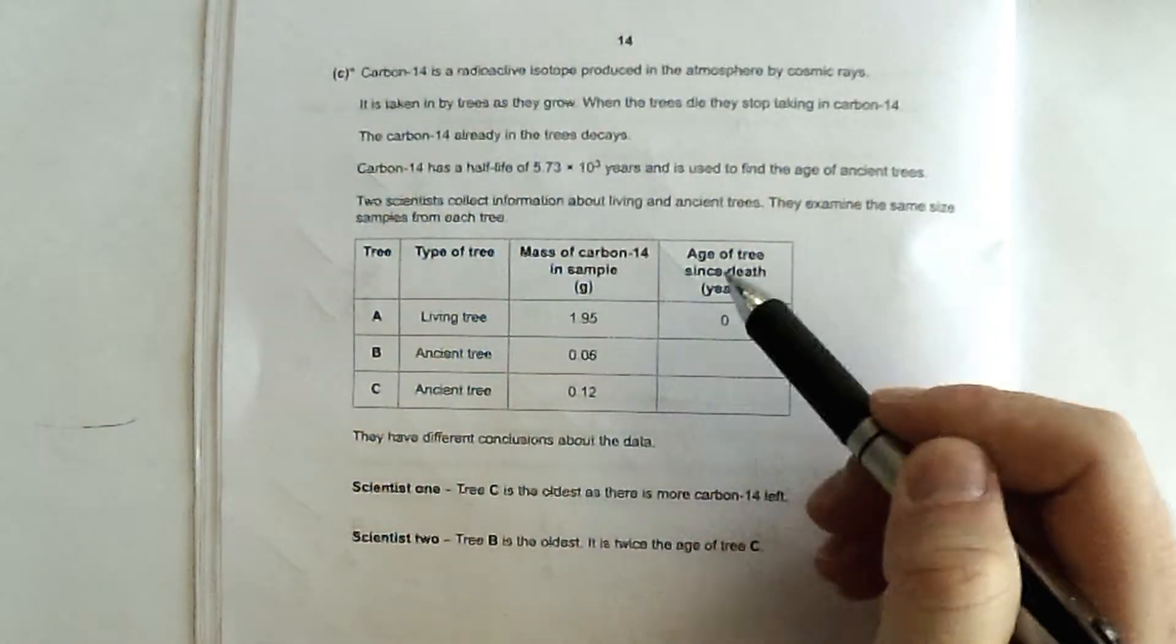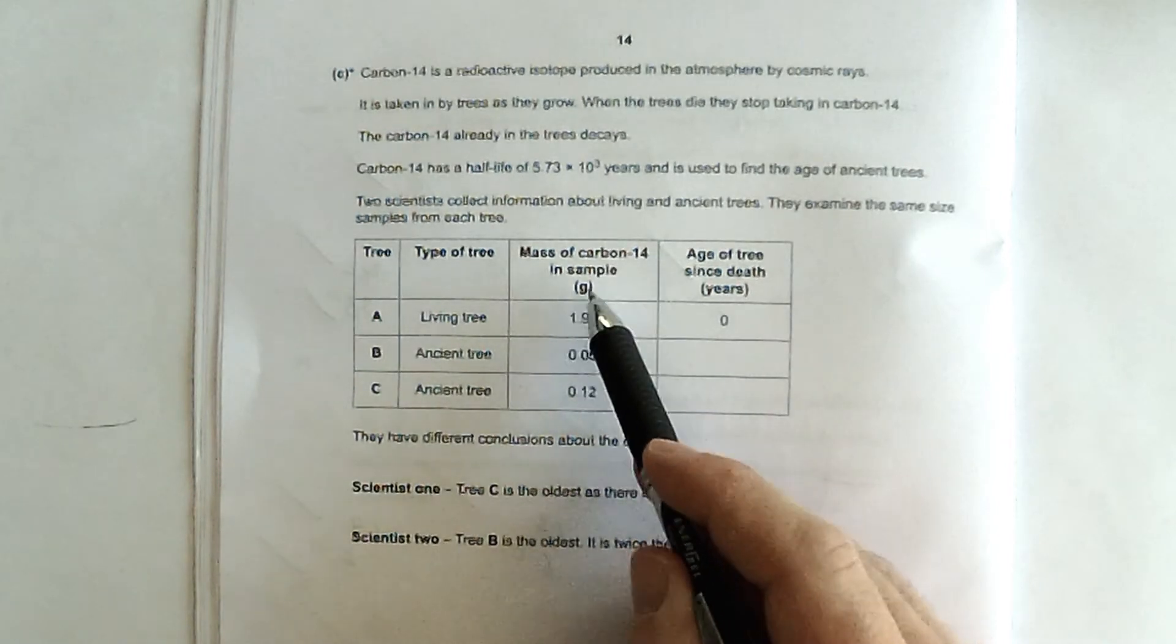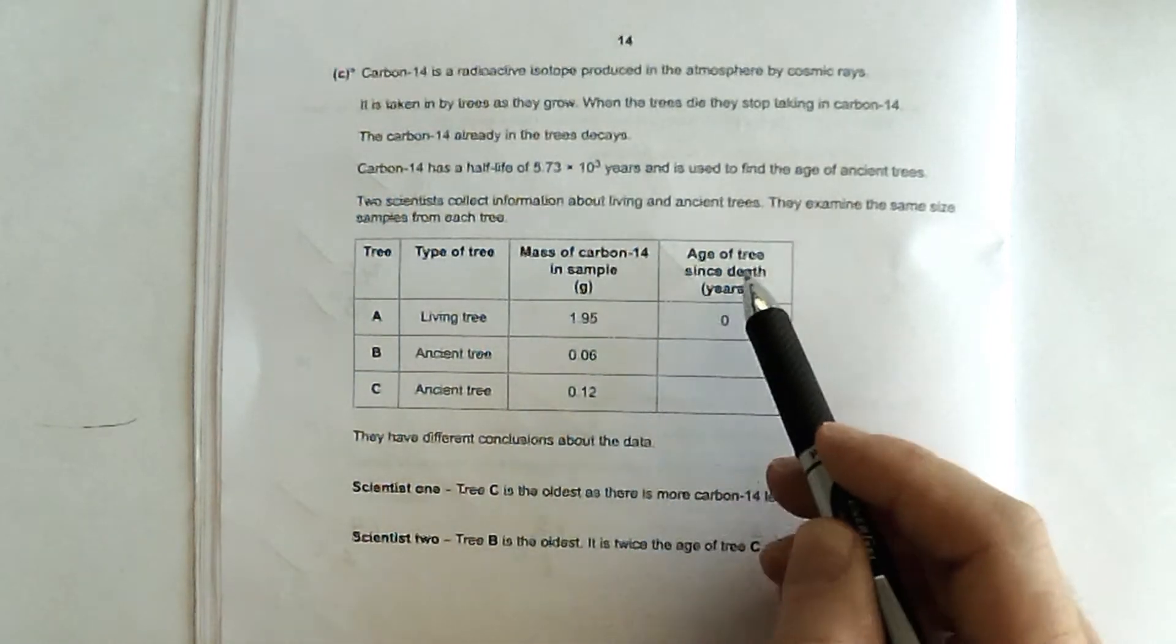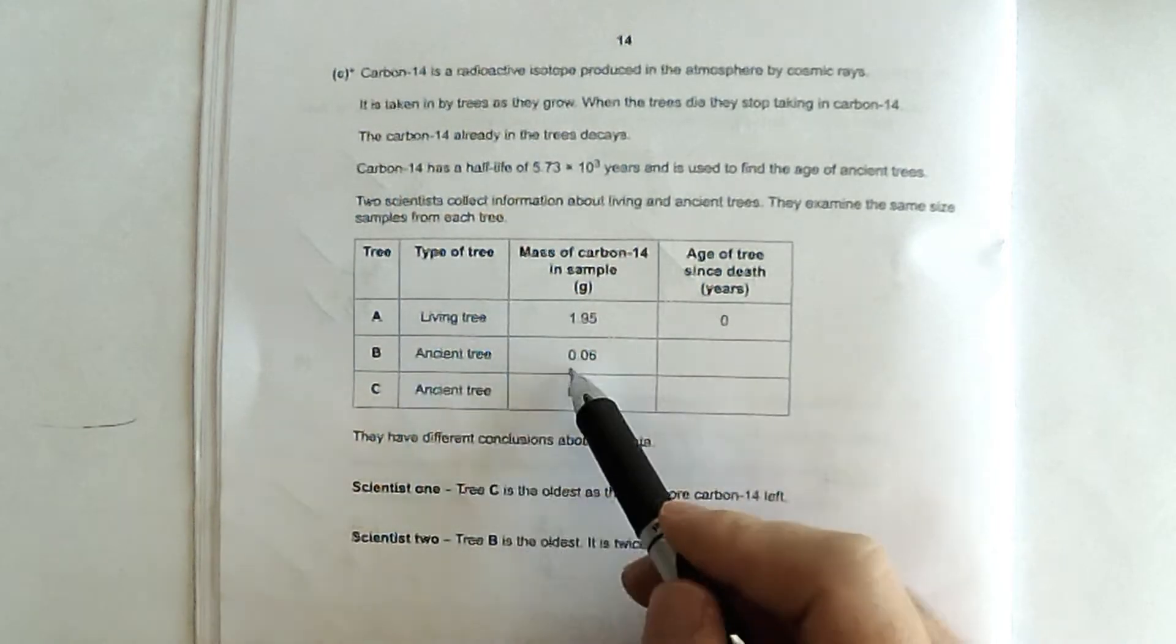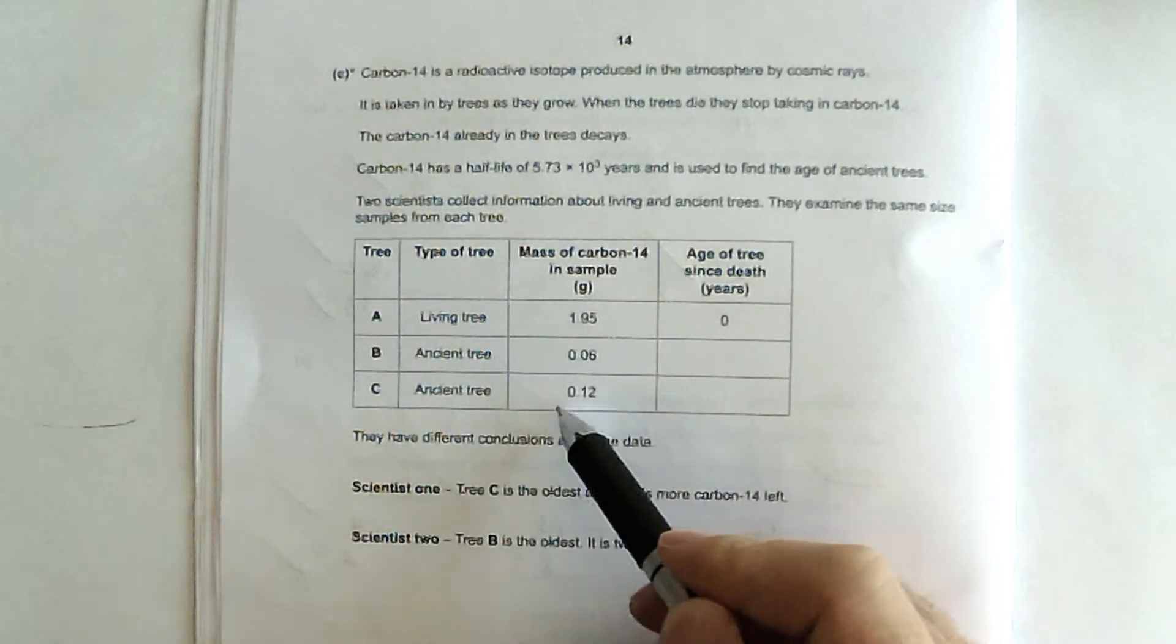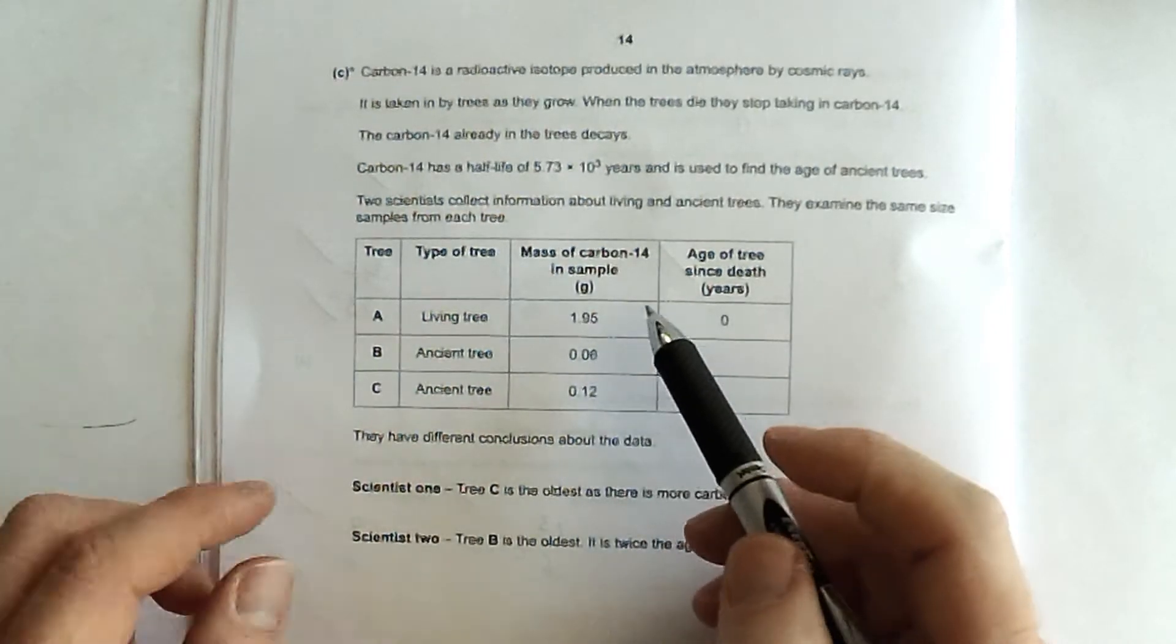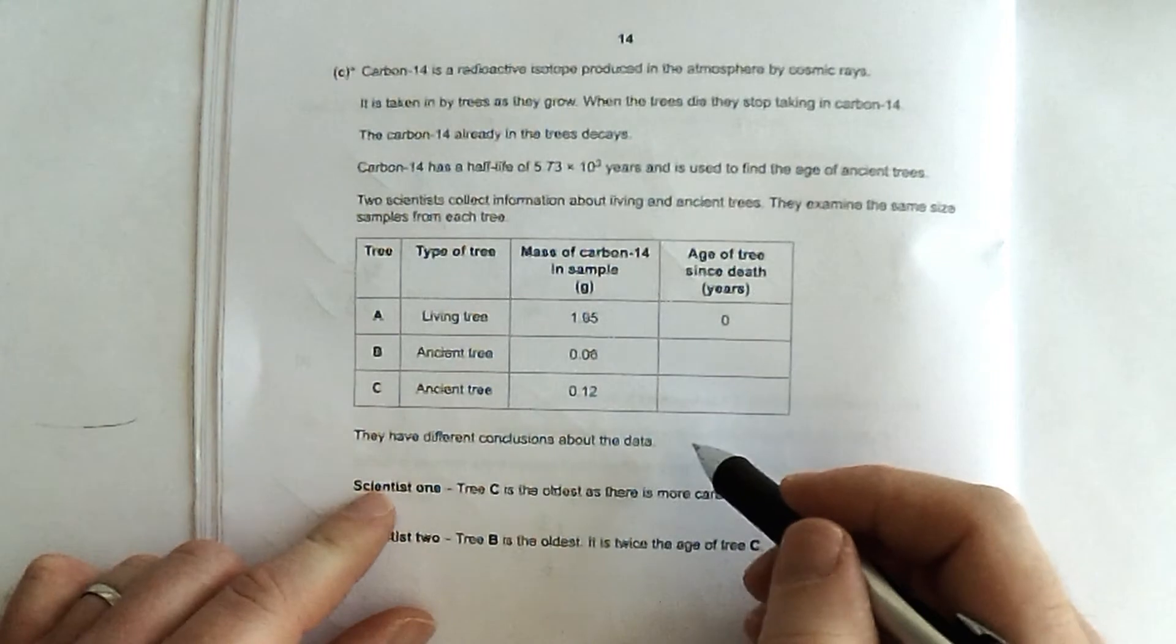The carbon-14 already in the trees decays. So this is why it's useful as a way of dating ancient things, because every single living thing has the same ratio of carbon-14 to carbon-12. Carbon-14 has a half-life of 5.7 times 10 to the 3 years, and it's used to find the age of ancient trees. Two scientists collect information about living and ancient trees. They examine the same size samples. So this data is from the same size sample from each tree. So there's a living tree.